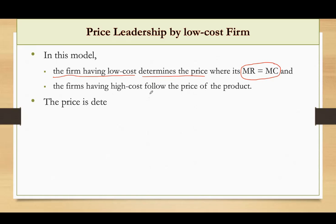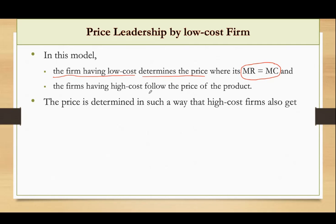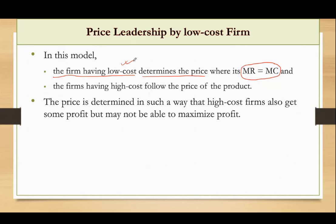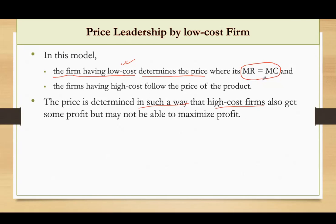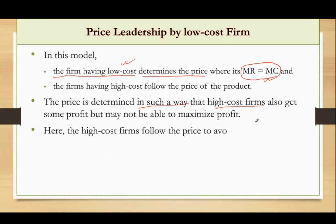The price is determined in such a way that high cost firms also get some profit, but may not be able to maximize profit. The condition of MR equals MC may not be fulfilled for the high cost firm. The high cost firms follow the price to avoid price war.